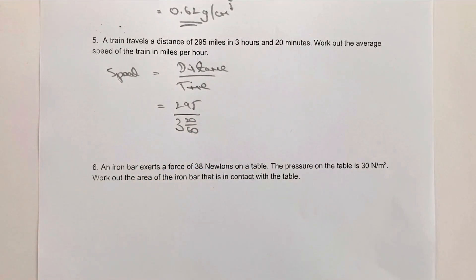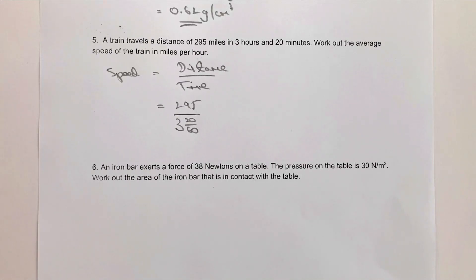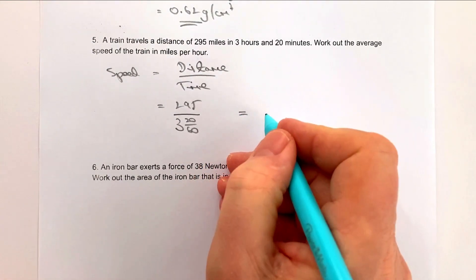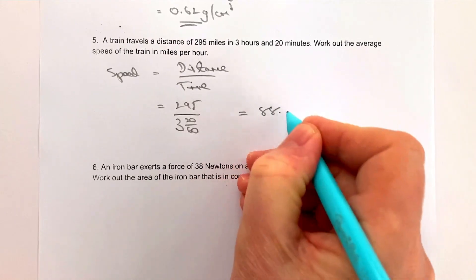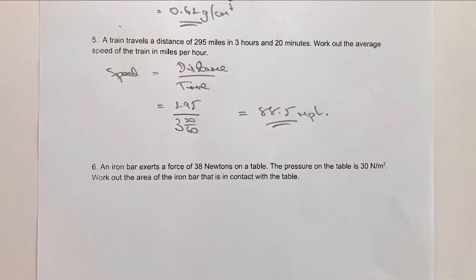You can write 3 hours 20 minutes as 3.3333 recurring, or simply put 20 over 60 into a scientific calculator. Either way, 295 divided by that time gives 88.5 miles per hour, which is the answer to question five.